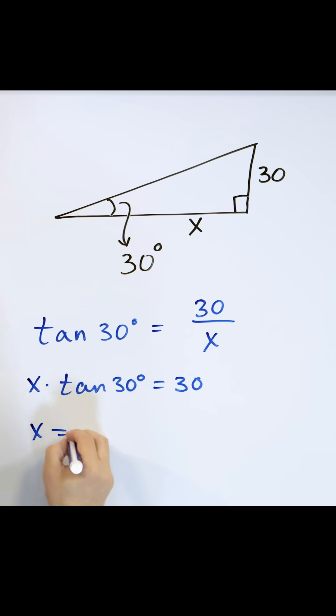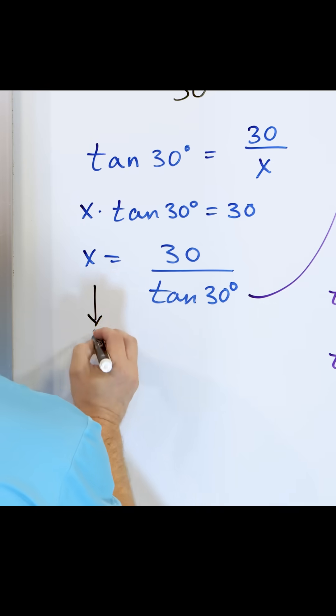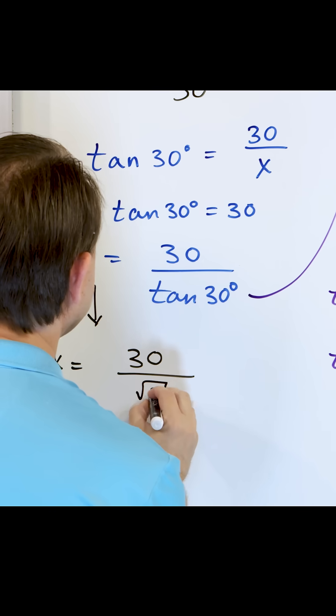Let's solve for x. It's going to be 30 divided by the tangent of 30 degrees. We need to go and solve for x. It's 30, square root of three over three.